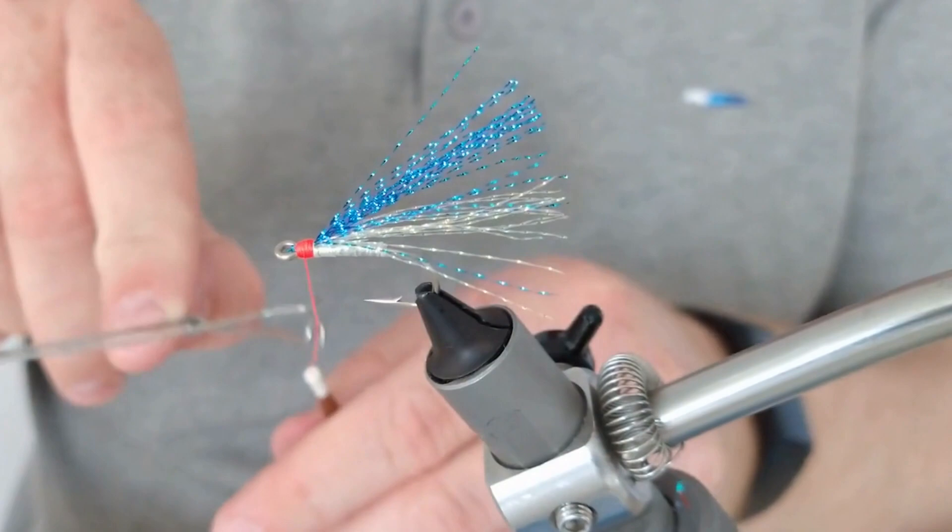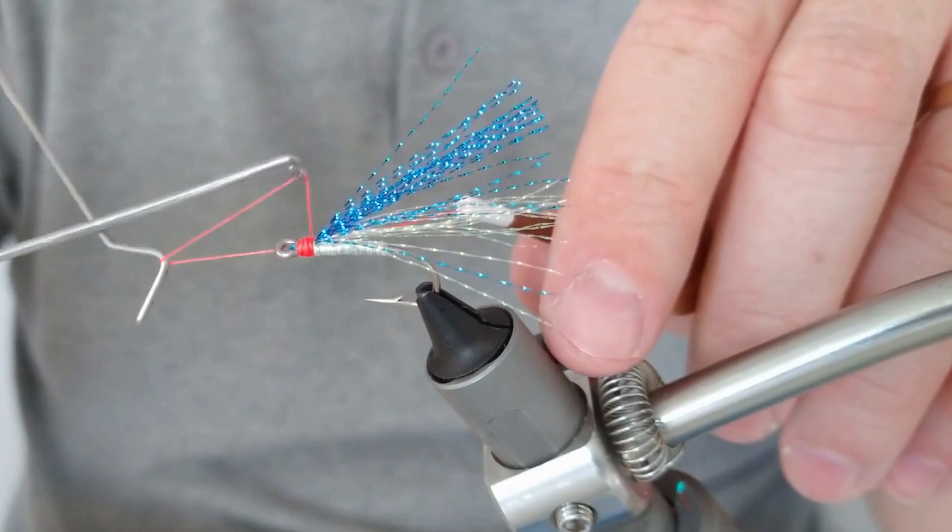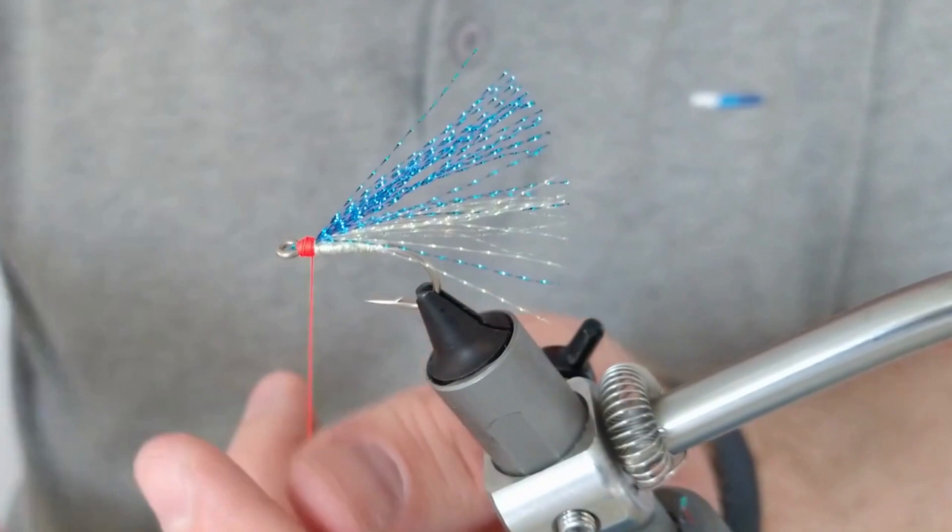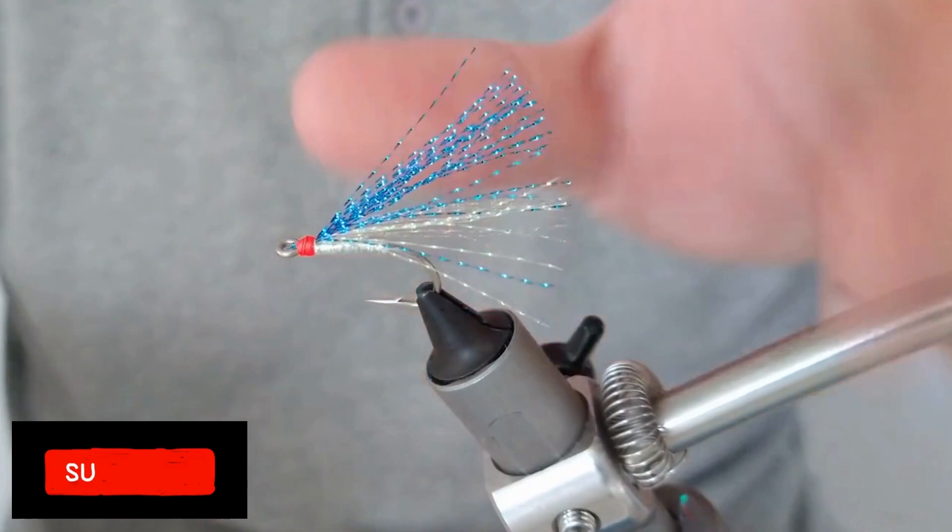I just need to whip finish. Four or five turns to whip finish out, and that's your fly finished. Add a wee bit of super glue on that head, a couple coats of varnish and that's you sorted.